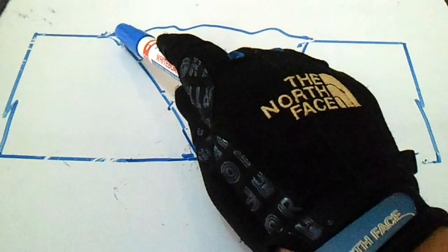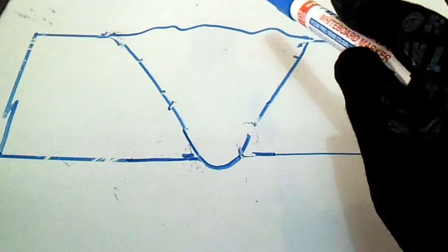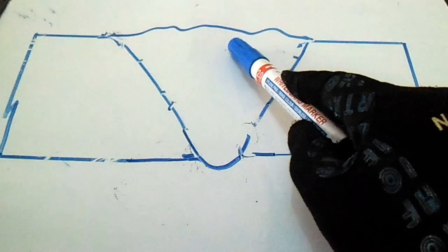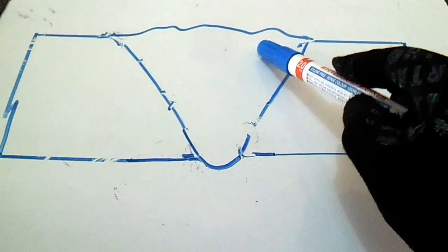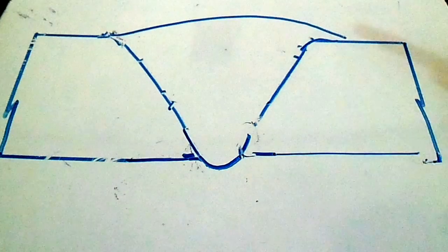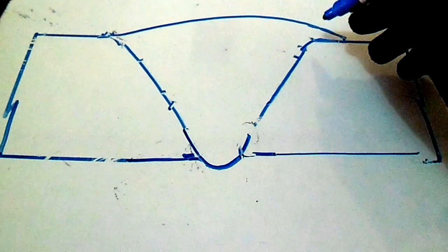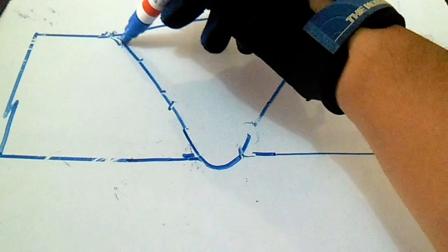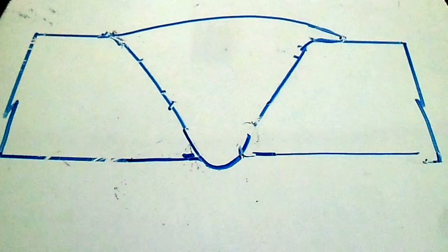If you see this on the weld face — a rough, uneven surface — this is also rejected by the inspector. This is called an uneven profile or rough welding surface. Another weld defect is overlap, where the weld metal overlaps onto the weld face.